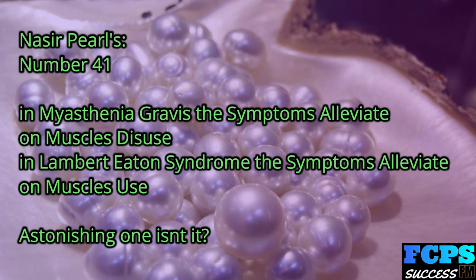Nasir Pearl number 41: In myasthenia gravis, symptoms alleviate with muscle disuse. In Lambert-Eaton syndrome, symptoms alleviate with muscle use.